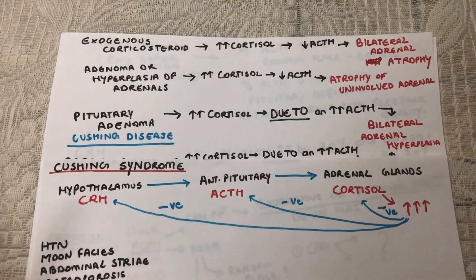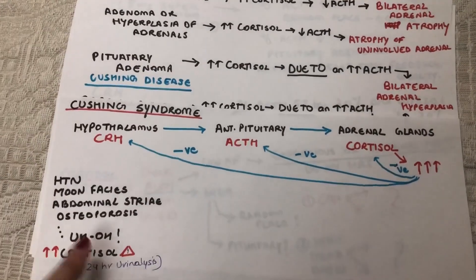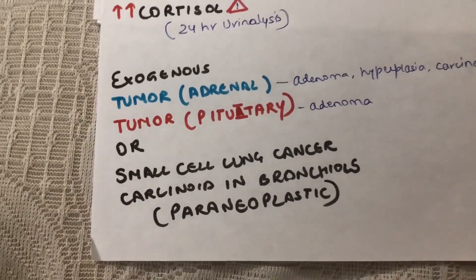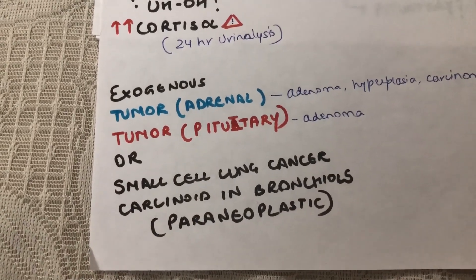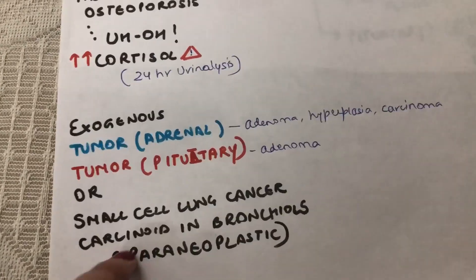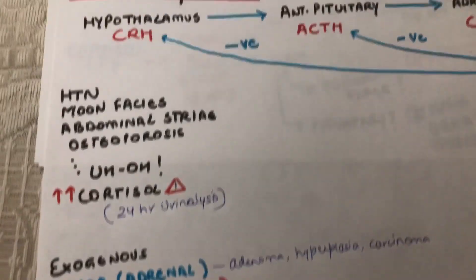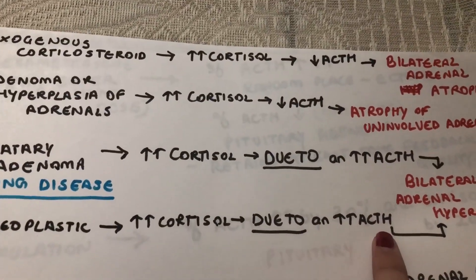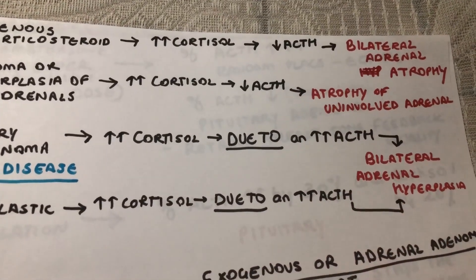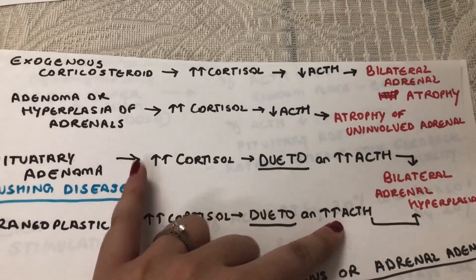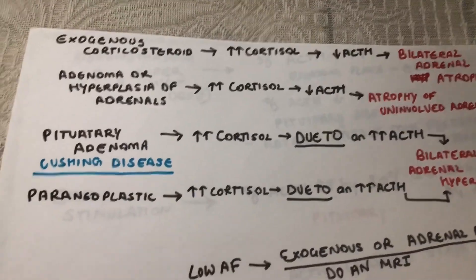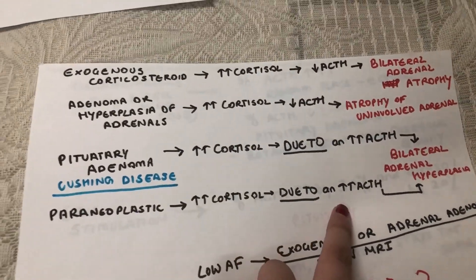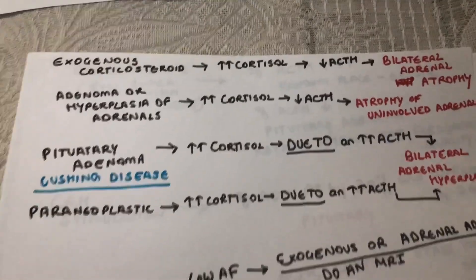If the pituitary and adrenals are both fine and you're not taking steroids but still have excess cortisol, it's coming from a paraneoplastic or ectopic ACTH source — most commonly small cell lung cancer or a bronchial carcinoid. Like pituitary adenoma, this causes bilateral adrenal hyperplasia, but the ACTH comes from an ectopic source. USMLE often presents this as someone with a 45-year smoking history, a cough, and abdominal striae.